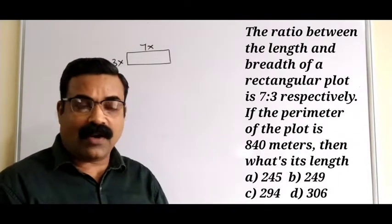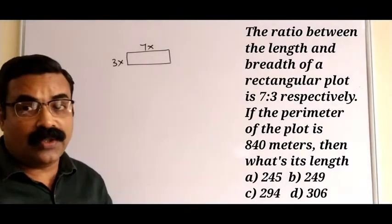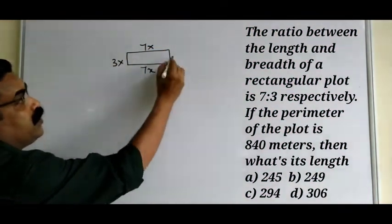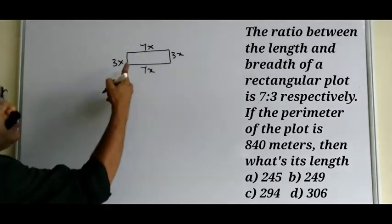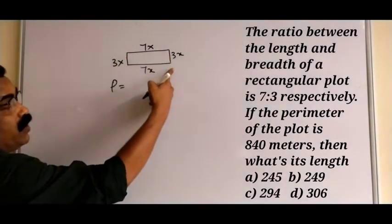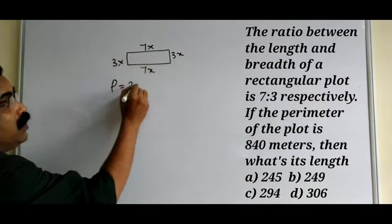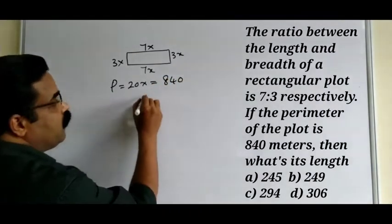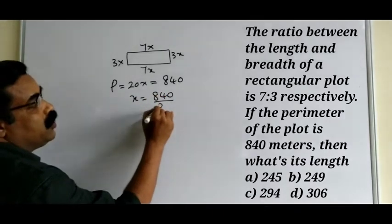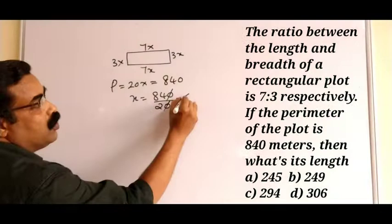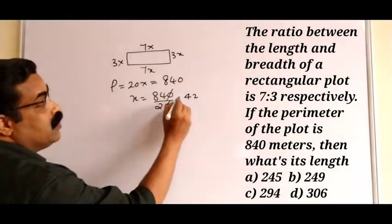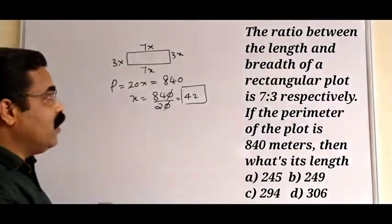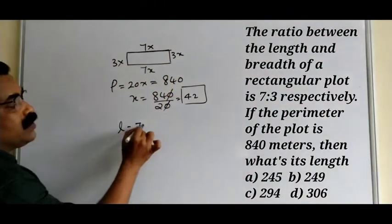Whatever ratio is given, we take the length and breadth accordingly. The perimeter is the sum of all four sides: 7x + 7x + 3x + 3x = 20x. The perimeter is given as 840 meters, so 20x = 840. Solving: x = 840 ÷ 20 = 42.